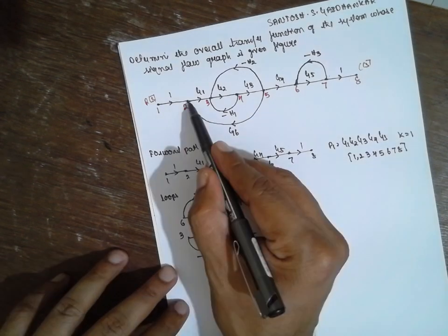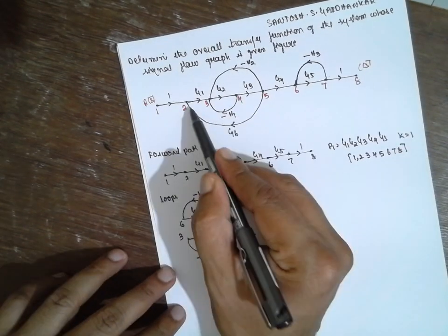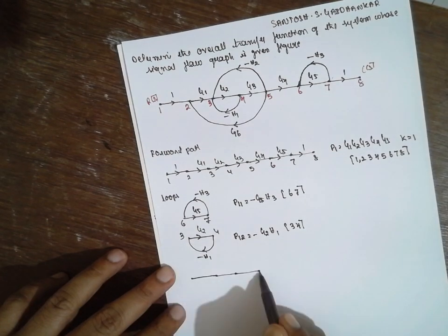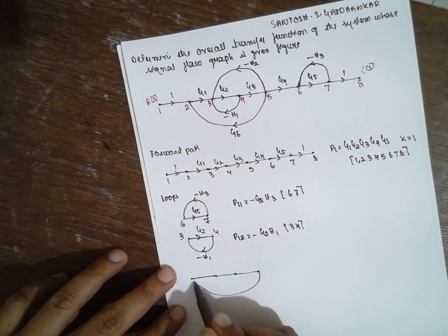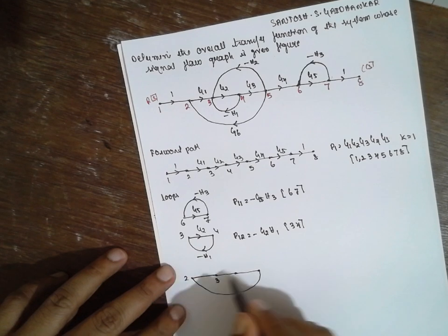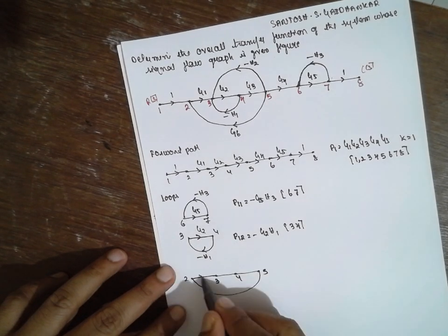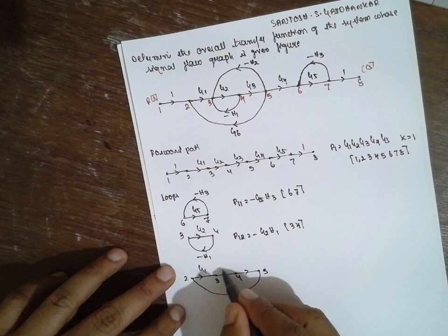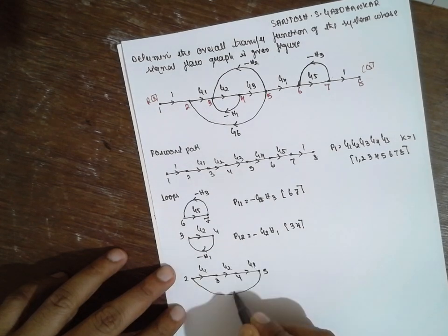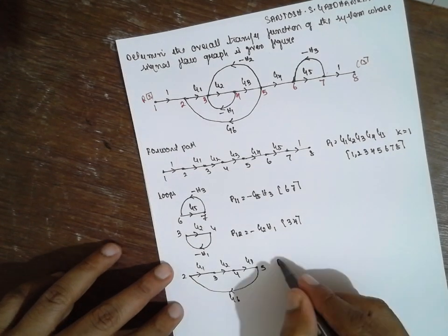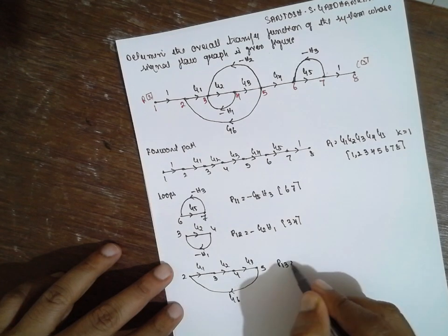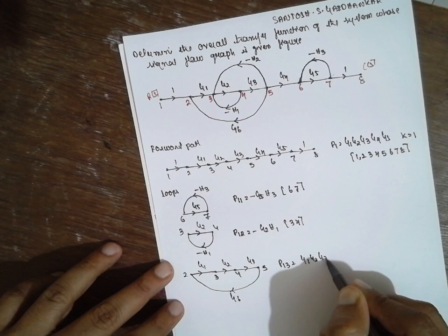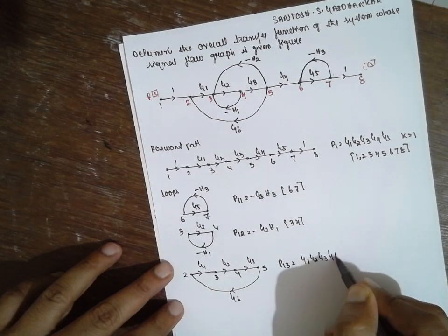The next loop involves nodes 2, 3, 4, 5, with gains G1, G2, G3, and G6. Therefore, P13 is equal to minus G1 · G2 · G3 · G6. The node numbers involved are 2, 3, 4, 5.